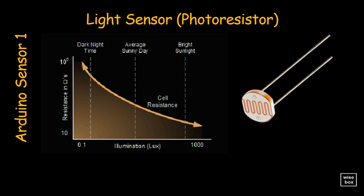In the dark, their resistance is very high, sometimes up to 1 megaohm, but when the LDR sensor is exposed to light, the resistance drops dramatically, even down to a few ohms, depending on the light intensity.